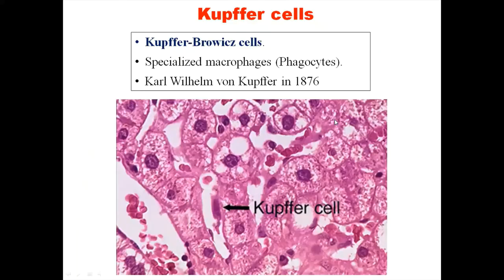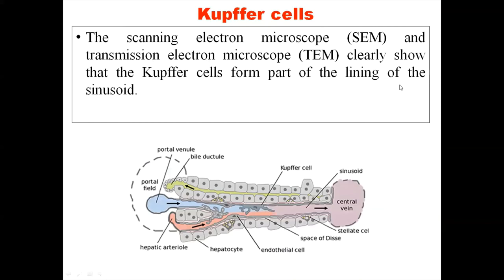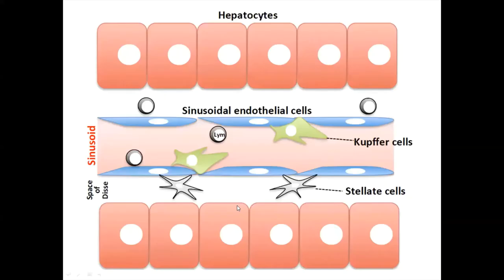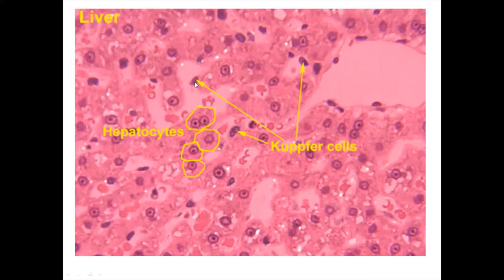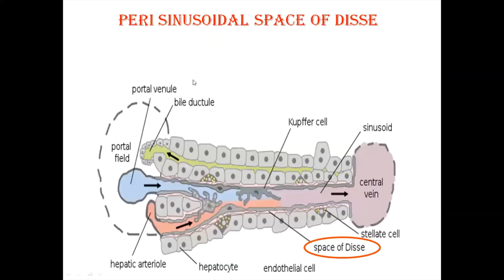Kupffer cells can be seen in the sinusoidal lining: in the endothelial space, hepatocytes have well-defined round nuclei, but some darkly stained, larger nuclei outside the hepatocytes toward the sinusoidal space are the Kupffer cells. They are not flat like endothelial cells. You need to go to 40x to identify Kupffer cells.